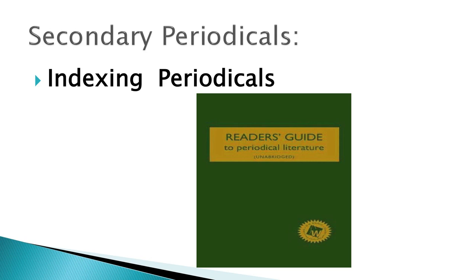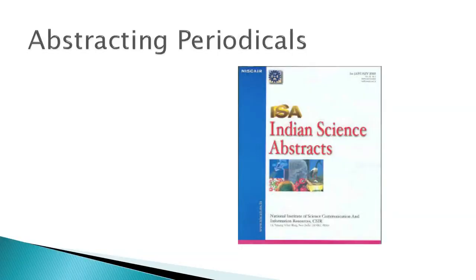Now we come to abstracting periodicals. In an abstracting periodical, the contents of selected items are condensed or summarized along with the bibliographical details of the document, which helps the reader identify and locate the original document. The abstract of the article helps the user decide whether to read the full document or not. An example is Indian Science Abstracts, a fortnightly abstracting periodical reporting scientific research work done in India and published in Indian journals.